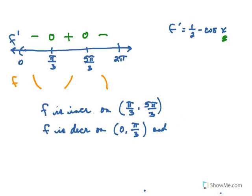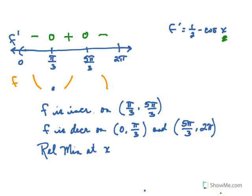And f is decreasing on the interval from 5 pi over 3 to 2 pi as well. We can also determine our relative max and min points. We have a relative minimum where the original function changes from decreasing to increasing, so at x equals pi over 3. And we have a relative maximum at x equals 5 pi over 3, where the derivative changes from positive to negative.